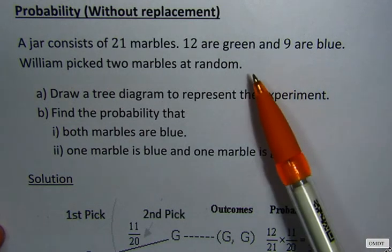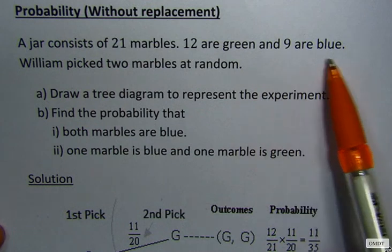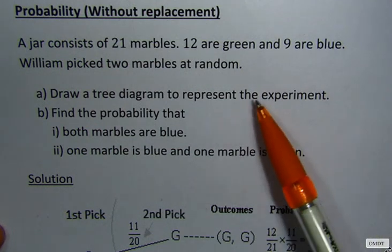A jar consists of 21 marbles. 12 are green and 9 are blue. William picked two marbles at random.